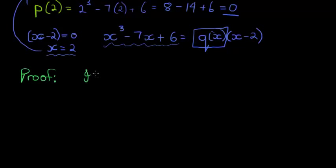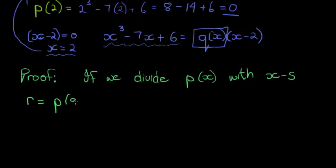Okay, first of all, if we divide our polynomial p(x) with a factor x minus s, then we know that the remainder is given by p(s). That comes from the Remainder Theorem.